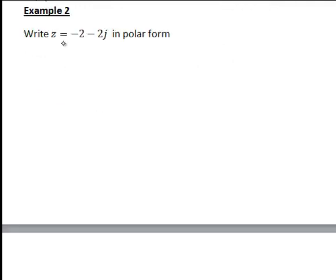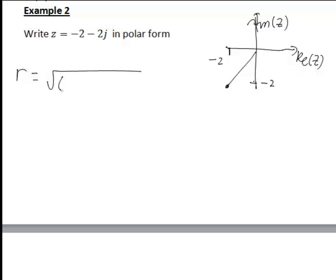So for our second example let's write z is negative 2 minus 2j in polar form, and again we'll start off with a quick sketch to see what this looks like on our Argand diagram. And negative 2 will be over there, negative 2j will be there, so in this case we have our complex number here. And once again the magnitude r is just the square root of x squared plus y squared, so square root of negative 2 squared plus negative 2 squared here, which just works out to be the square root of 8, or equivalently we could write that in the form 2 root 2, just simplifying that.